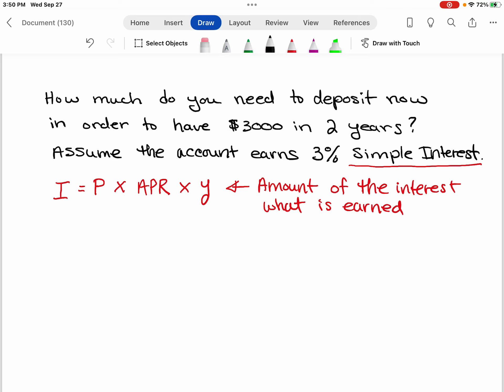So what we need to do is we need to figure out the principal. So we have the principal plus the interest will give us a total of $3,000 at the end of the two years.